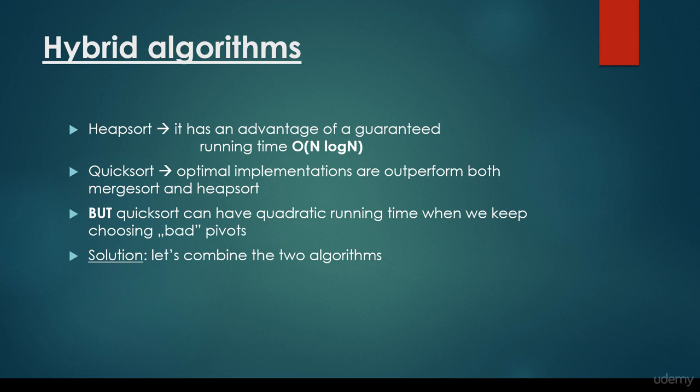We have the quick sort. The optimal implementations outperform both merge sort and heap sort. So quick sort is said to be the best known sorting algorithm in the main. But quick sort can have quadratic running time when we keep choosing bad pivot items. So this is what I have been talking about, that there are several disadvantages for several sorting algorithms.